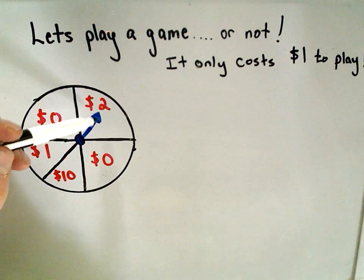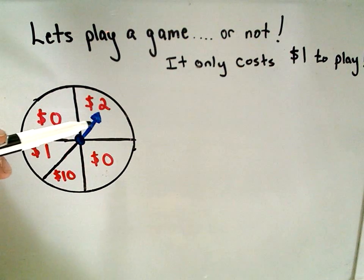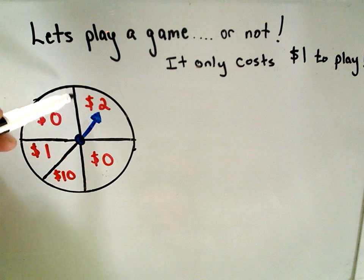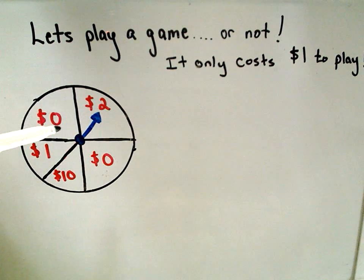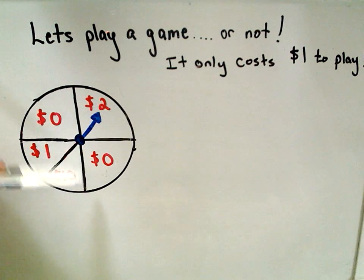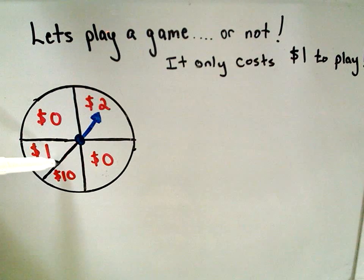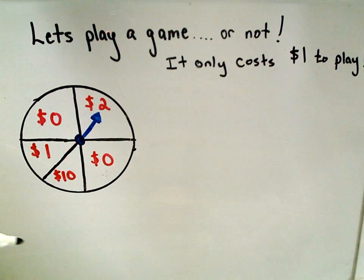So you're going to spin the little blue spinner, and whatever the arrow's pointing at, whatever region it's in, you'll get that amount of money. And for simplicity's sake, let's just assume that it will never fall on a line. You can always decide it falls into one region or the other region.